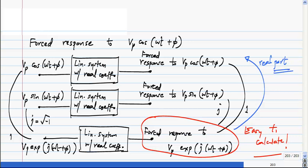The reason this works is because the linear system has real coefficients. If it had complex coefficients things could get mixed up. There are actually systems like that which we won't go into at all. This j which is square root of minus one kind of keeps the two things separate. You can combine them into exponential but they are still separated as real and imaginary parts.